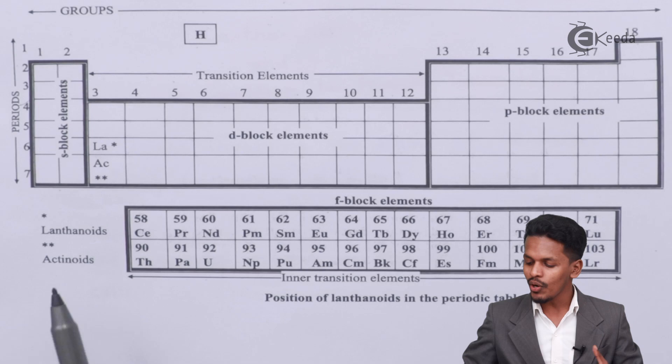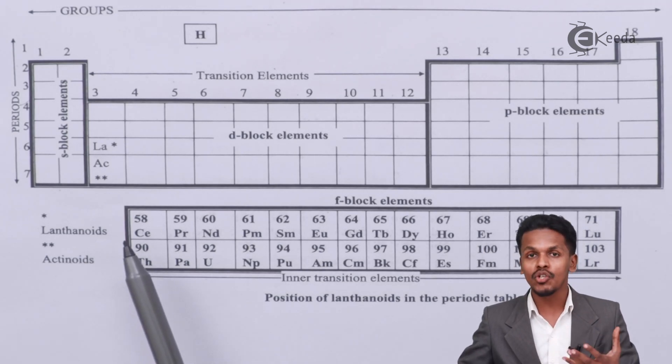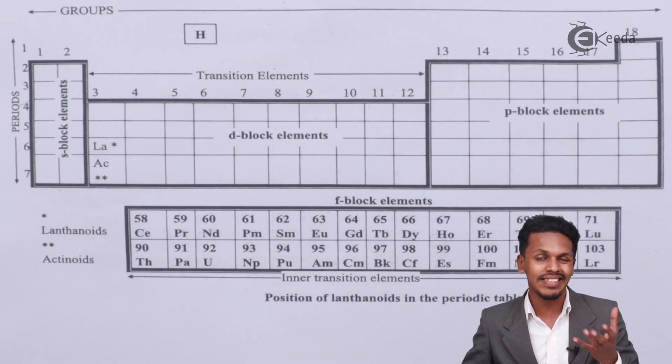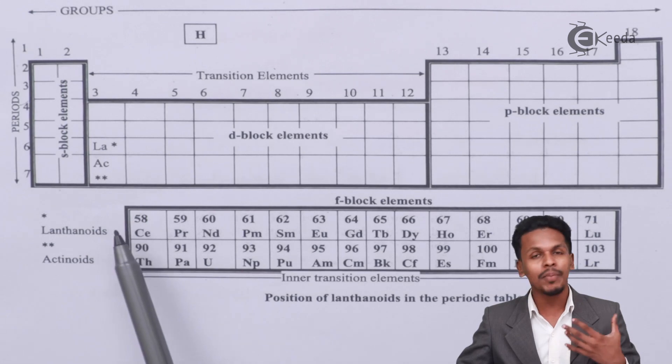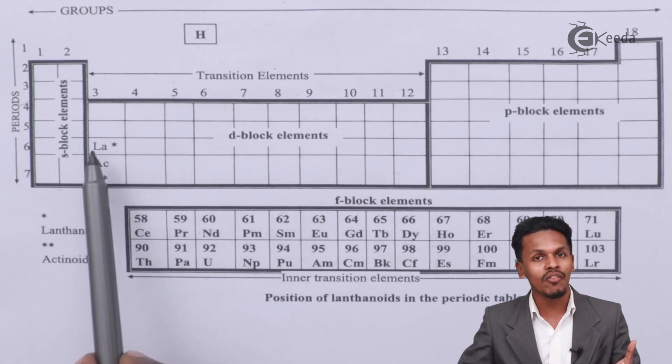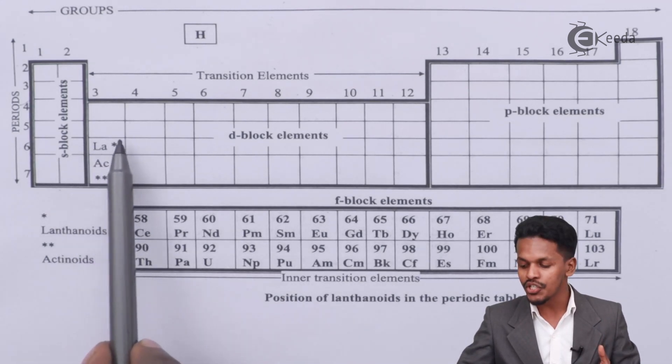But in talking about lanthanoids, it has been found that there is not much change in the atomic size and all the atomic sizes are almost the same. And that is the reason, not only because of the atomic size but also because all the chemical properties are very much similar to that of lanthanum. So therefore these are all basically kept in this position only.